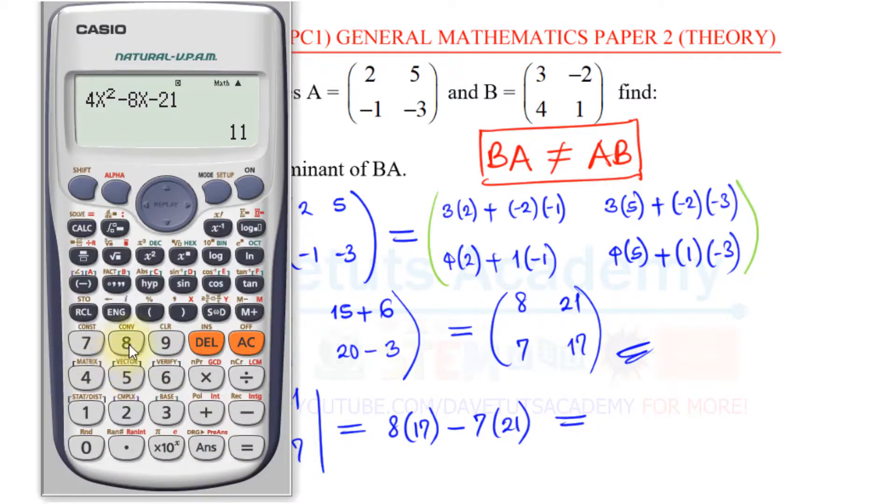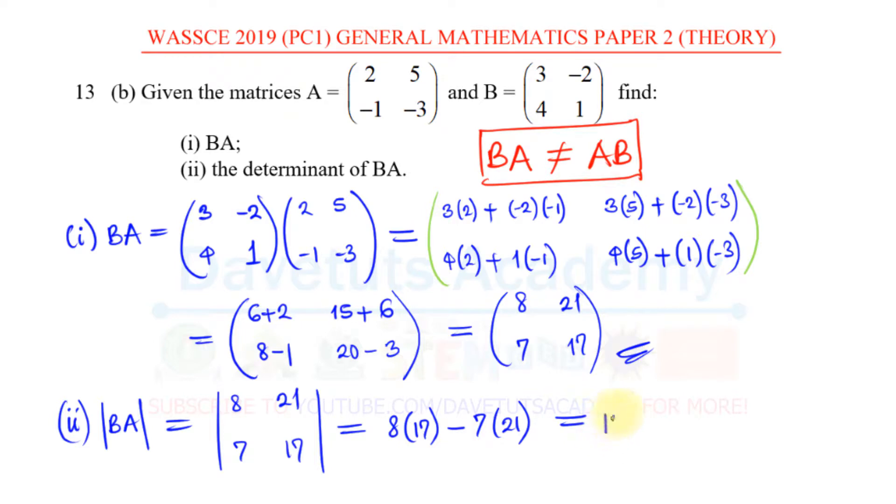So, what's that going to give us from the calculator? 8 times 17 minus 7 times 21, that is minus 11. Or, if I just want to work it out, 8 times 17, that's 136, minus 7 times 21, that is 147. 136 minus 147, since 147 is greater, we say 7 minus 6, that is 1, 4 minus 3, that is 1. Then we carry the negative sign. This is minus 11, as we got initially.